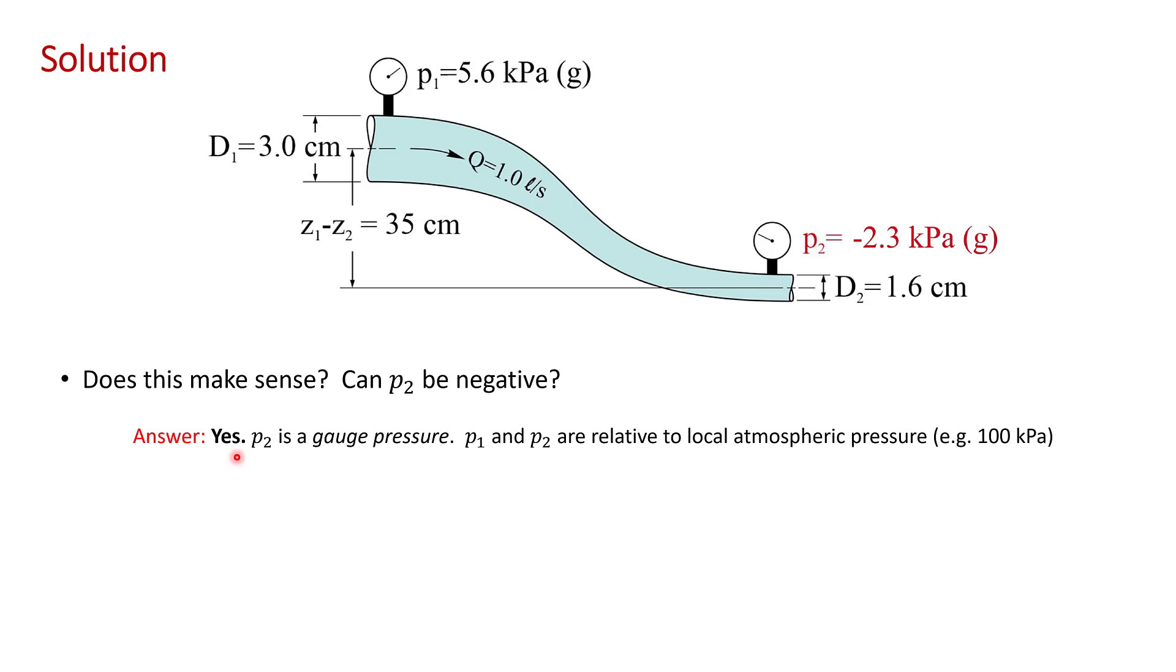P2 is a gauge pressure. I purposely showed Borden gauges in the sketch. So, both P1 and P2 are relative to the local atmospheric pressure. So, P2 can be negative. This is a callback to Chapter 2, where I discussed gauge and absolute pressures.